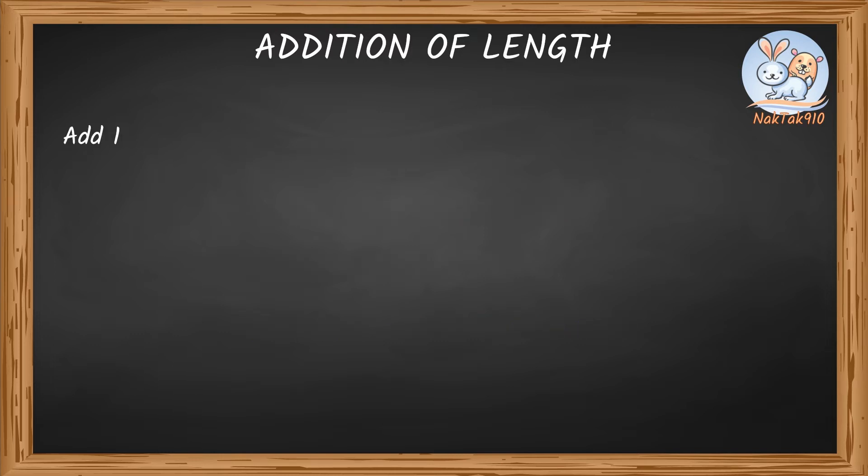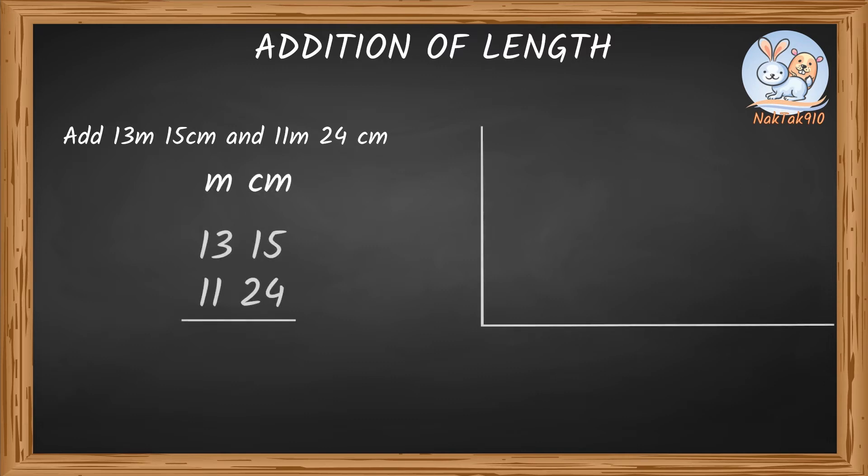Let's add 13 meters 15 centimeters and 11 meters 24 centimeters. These measurements contain mixed units, with meters and centimeters. So the first step is to arrange meters and centimeters in columns, one below the other. Just like whole number addition, we start from the right and add towards left. So let's add the centimeters column first.